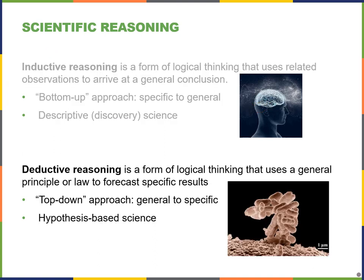Deductive reasoning, on the other hand, begins with a general principle or idea and uses it to predict specific results — we often call this a top-down approach. For example, we could start with the general statement that prokaryotes are organisms without a nucleus. Bacteria like E. coli also do not contain a nucleus, so we can conclude more specifically that these bacteria are prokaryotes. We usually use deductive reasoning in hypothesis-based science, where we use generally known laws or theories to generate an initial hypothesis — a tentative answer to a question — and then conduct an experiment to get specific results.